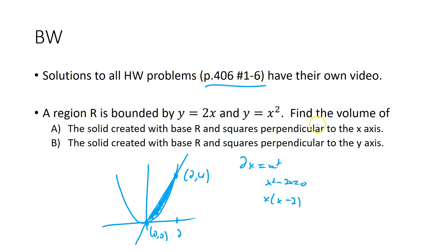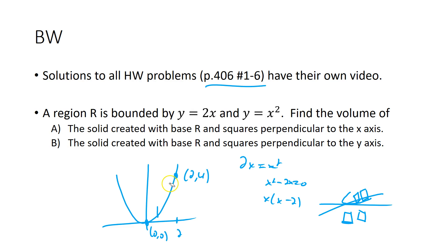We're going to do two different solids here. One where we have squares perpendicular to the x-axis — those would be tall and skinny. And one where the squares are perpendicular to the y-axis — those would be shorter. We'll see if we get the same answer; sometimes you do, but it's not guaranteed. Let's try perpendicular to the x-axis first.